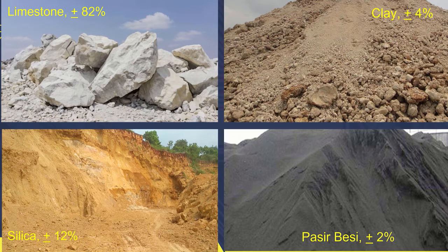From these four components of raw materials, with certain compositions they are added simultaneously to the process of grinding the raw materials, to a fineness of 12–14% on a 90 micron sieve, and moisture content less than 1%. The raw mill product is then stored in a silo, prepared for the combustion process in the kiln system.